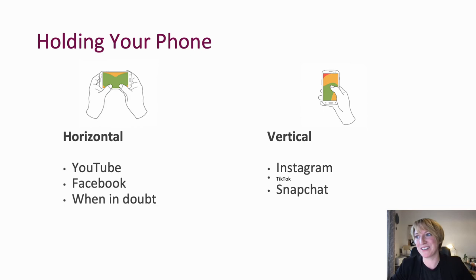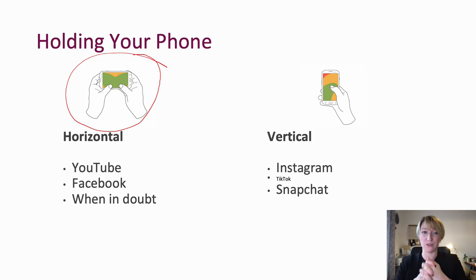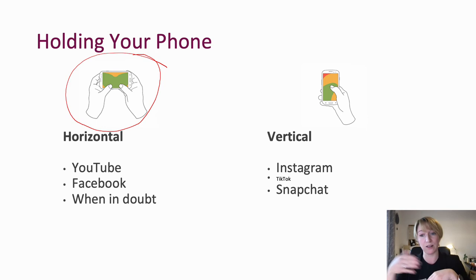There is some argument about how to hold your phone for different purposes, but I always tell people to go with horizontal. Holding your phone horizontally is the shape of your computer screen and television screen, and it's a little bit easier to compose shots. If you need to later crop your shots for Instagram, TikTok, or Snapchat, you can crop in from a horizontal shot fairly easily, whereas it's very difficult to crop out from a vertical to a horizontal shot.